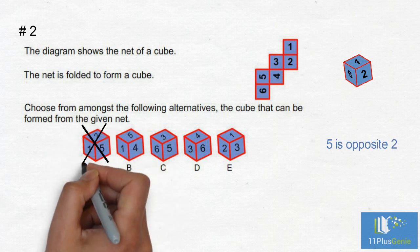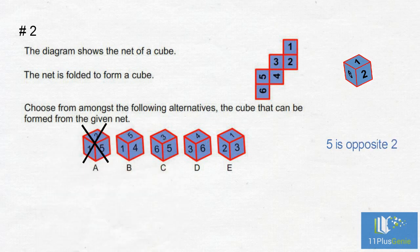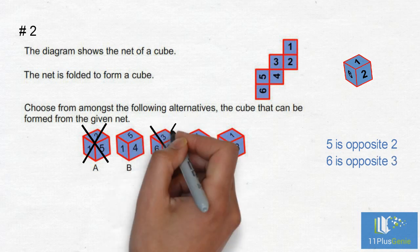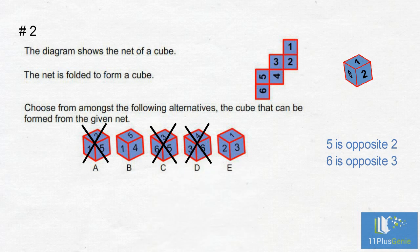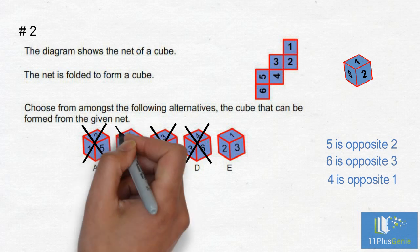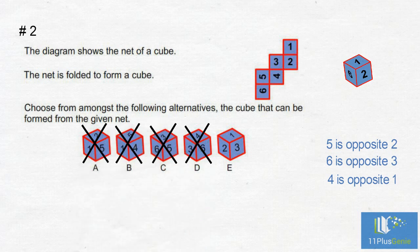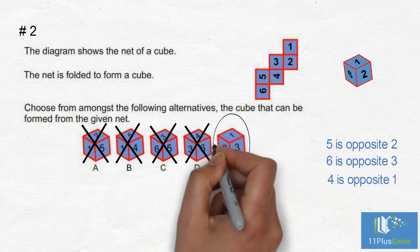We can eliminate A because 5 cannot be next to 2. 6 is opposite 3, so we can eliminate C and D. 4 is opposite 1, so we can eliminate B. The correct answer is E.